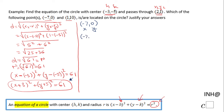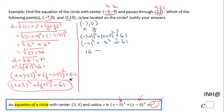Plugging in negative 7 and 0: (negative 7 plus 3) squared plus (0 plus 5) squared equals 61, question mark. Negative 7 plus 3 is negative 4, so we have (negative 4) squared plus 5 squared, checking if this equals 61. That gives us 16 plus 25, which is 41. Since 41 does not equal 61, this point is not on the circle.